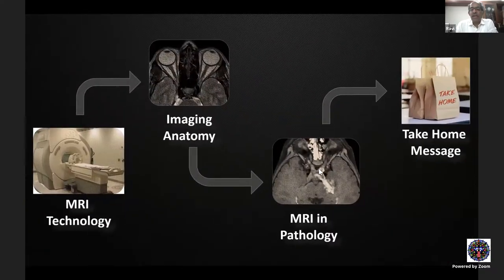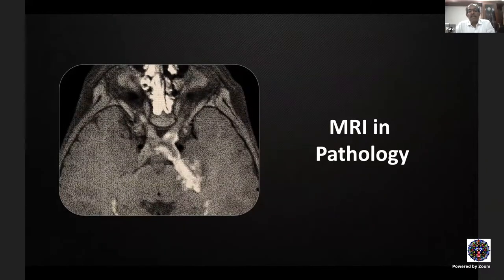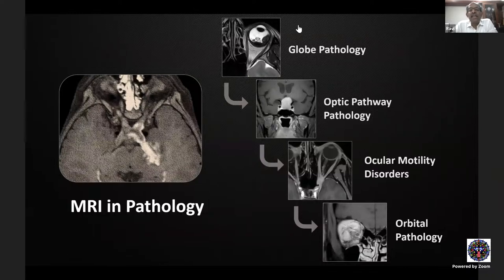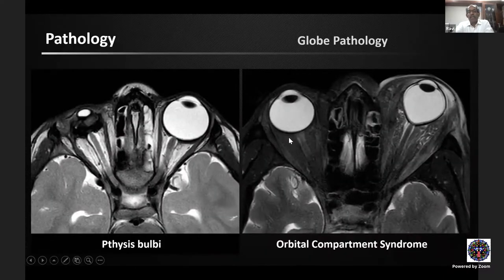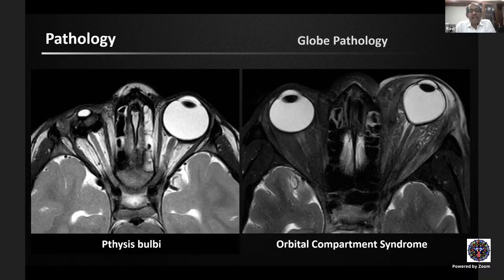For globe pathology, MRI is the modality of choice, especially when media is not clear. Phthisis bulbi appears as a disorganized shrunken globe with T2 hypointensity from dense calcification and optic atrophy — though CT is better for visualizing calcification itself. Orbital compartment syndrome in this patient with orbital cellulitis shows extensive retroorbital fat and extraocular muscle edema causing gross proptosis with optic nerve stretching and globe tenting — an angle at the posterior globe less than 130 degrees — this is an emergency requiring immediate treatment.